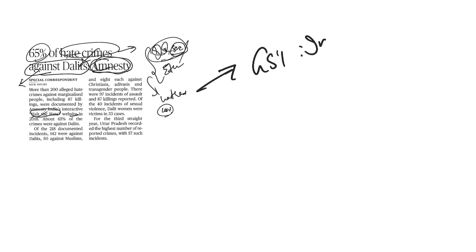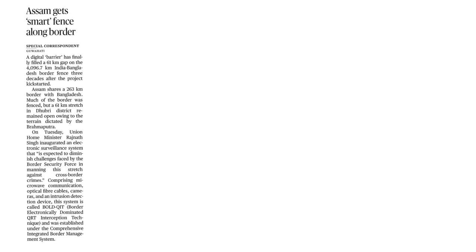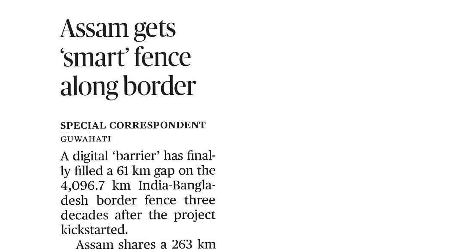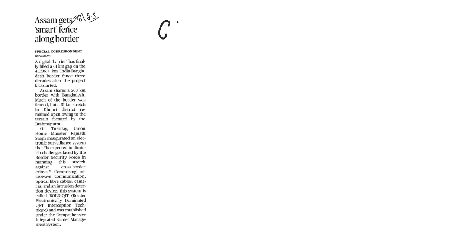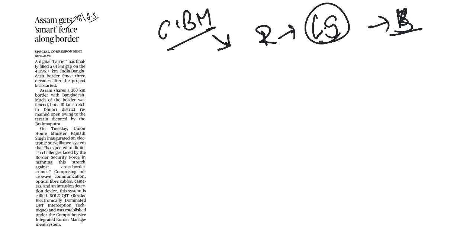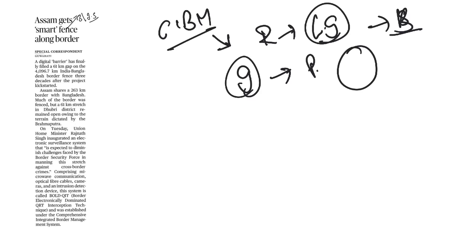The next article is 'Assam Gets Smart Fence Along the Border,' under GS Paper 3, Internal Security. This relates to the BOLD-QIT project and the Comprehensive Integrated Border Management System (CIBMS). This system provides round-the-clock laser-guided surveillance of borders. The smart fencing project covers gaps in physical fencing and will eventually be implemented across the entire border. Smart fencing is a web of surveillance, communication, and data storage services that enables monitoring even in difficult weather conditions.